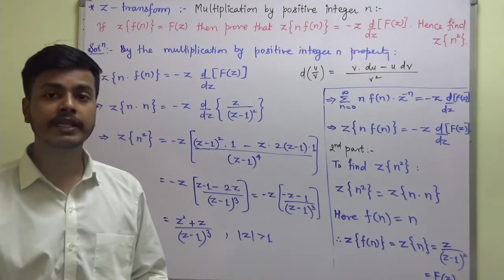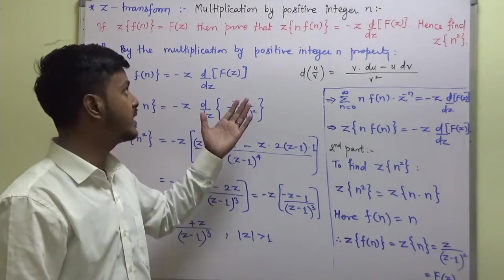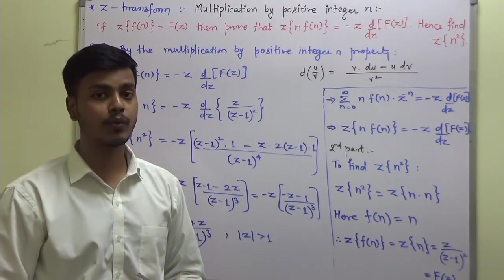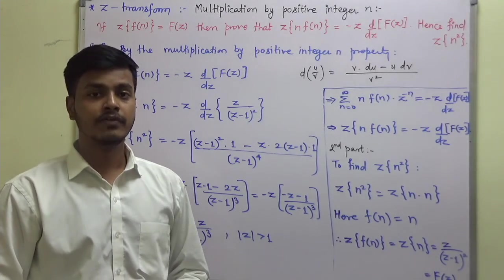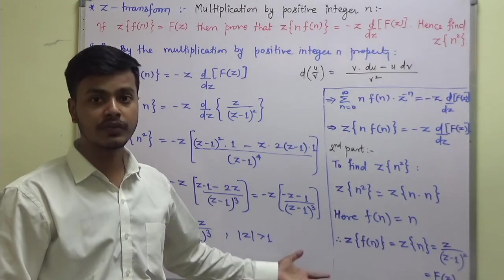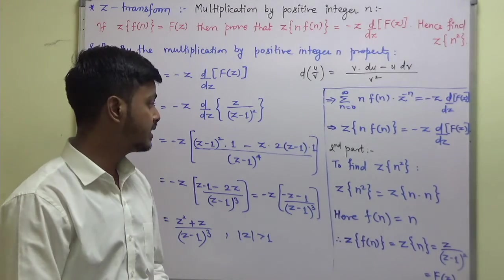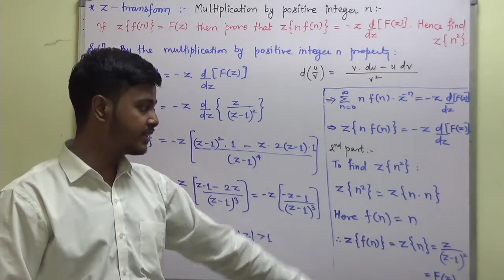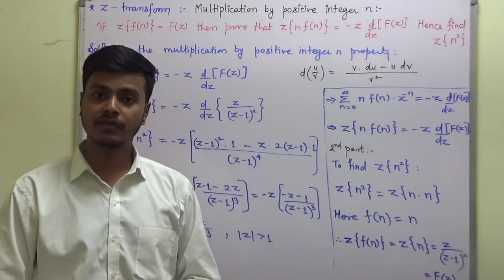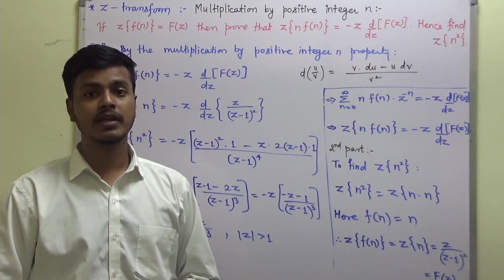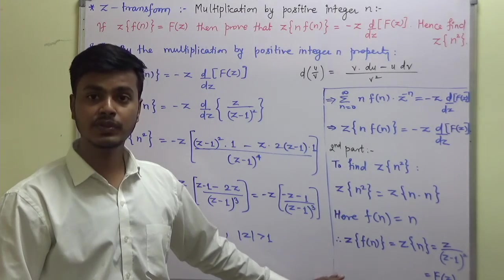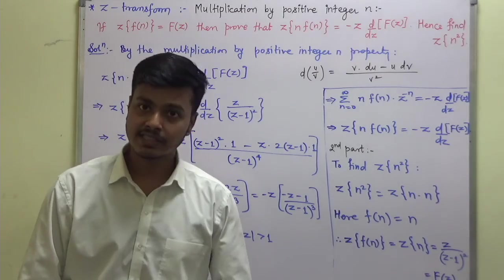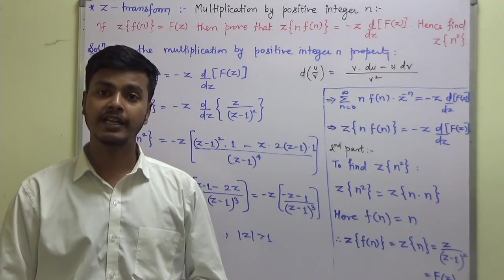So the Z transform of n squared comes out to be (z squared plus z) upon (z minus 1) cubed. In this video we have seen the multiplication by positive integer n property, followed by one example. We can make use of this property as and when required. I hope this is clear to you. For any doubt, you can contact. Thank you for watching and have a good day.